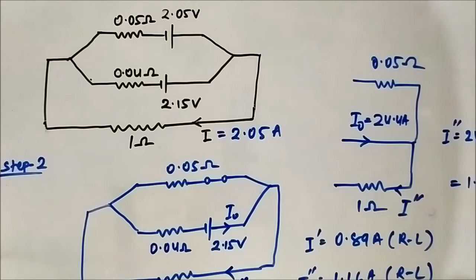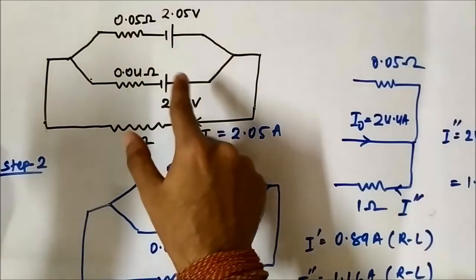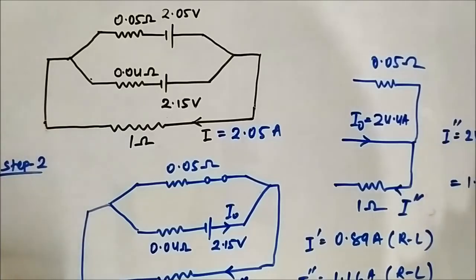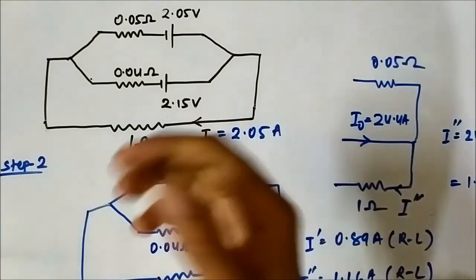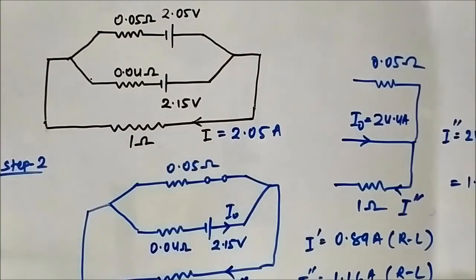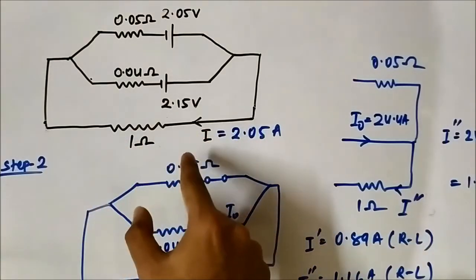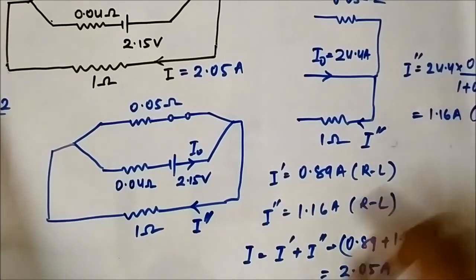Superposition theorem works as follows: consider each source — whether voltage or current — alone at a time, and deactivate the others. To deactivate: replace voltage sources with short circuit and current sources with open circuit. Find the response, whether it is current through an element or voltage across it, due to each individual source.